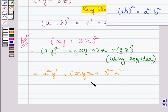Now this expression is further equal to x square y square plus 6xyz plus 9z square. Square of 3 is 9. So here we have written 9 for 3 square.